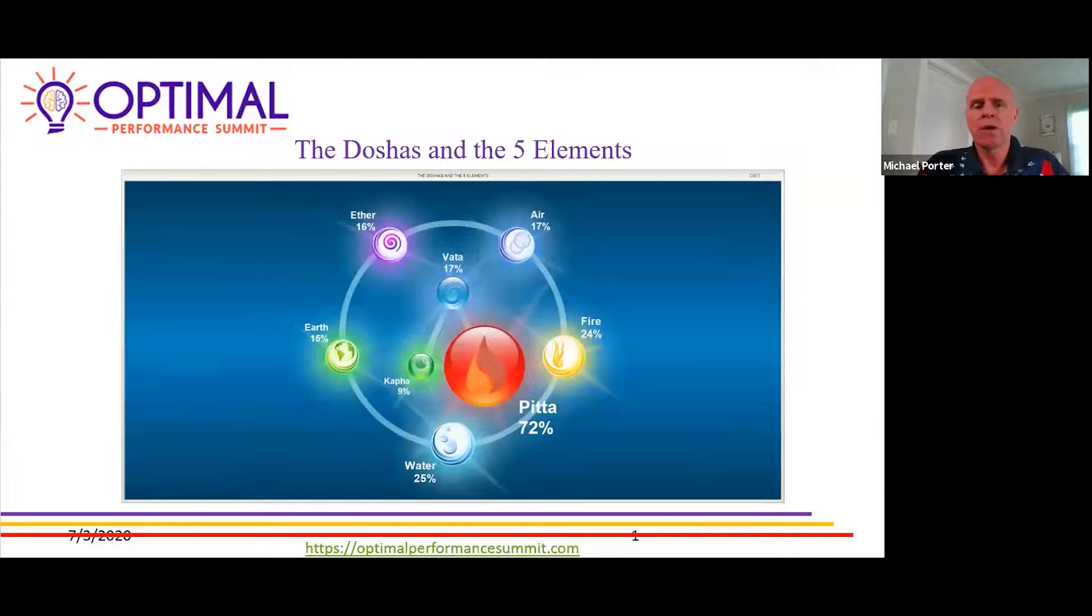For those who do Ayurveda, we've got the doshas—the pitta, vata, and kapha—and we also have the five elements. This is something else that if you are a naturopath in energy medicine and you utilize these tools, this is another way you can gauge where that patient's at on their functioning.